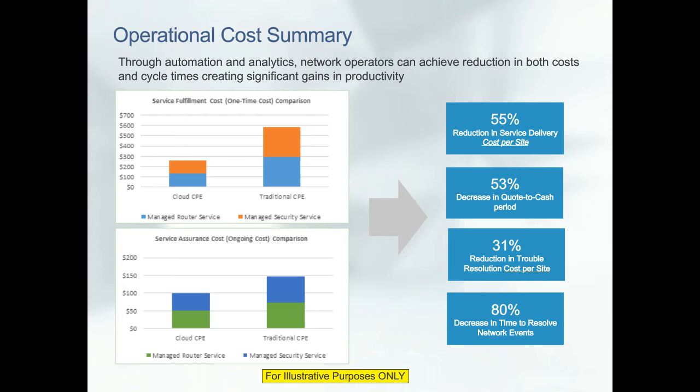For the service assurance piece — the ongoing monthly and yearly cost — there will be fault and performance reporting requirements, root cause analysis, monitoring and reporting, congestion management, and ticket flow management. Some of these can be automated because of automation scripts, and the analytics provides the ability to zero in on a network event quickly. That is the reason why some service assurance costs can be reduced, as well as the cycle time. How much of a factor do you think these will be in reducing your operations costs? That is something to consider and include in your business case analysis.